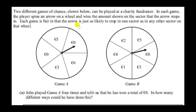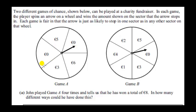Two different games of chance can be played at a charity fundraiser. In each game, the player spins an arrow on a wheel and wins the amount shown on the sector that the arrow stops in. Each game is fair in that the arrow is equally likely to stop in one sector as in any other. So in Game A, we have five sectors, and the arrow is equally likely to stop on the zero euro sector as on the five euro sector.